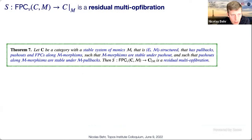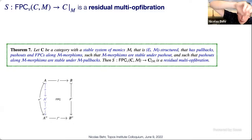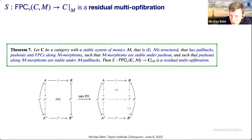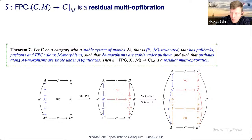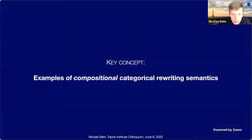This gives our canonical example of a residual multi-op vibration. Why is this relevant for compositional categorical rewriting semantics? We define rules as spans in DPO and SqPO, qualifying them as linear or generic depending on whether the morphisms are in M. DPO semantics defines a double category of spans where both squares are pushouts; SqPO semantics has the left square as a pushout and the right square as a final pullback complement.